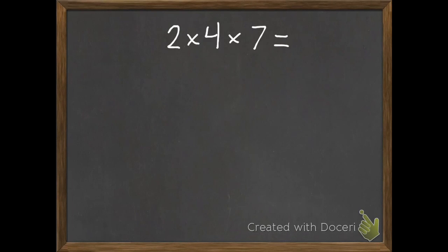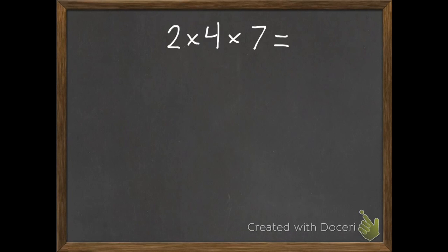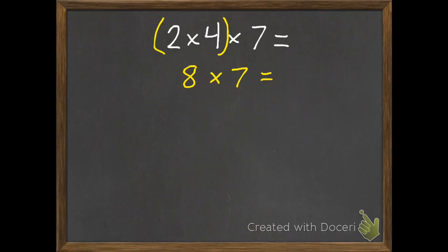So here's my first example, and you'll be doing something similar. You're going to have three numbers to multiply and you need to decide how you want to group them. You can just pick one way; you don't have to do both. In my examples I will do both, though. So if I was doing this, I would group the first two: 2 times 4 is 8, and I still have times 7. I picked it this way because I know 8 times 7 equals 56.